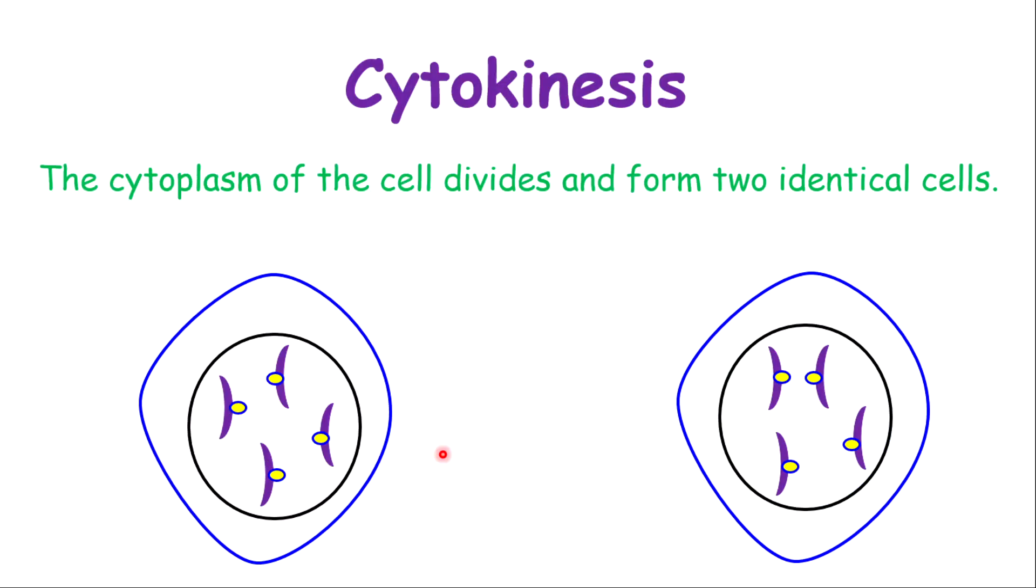After telophase, you will have the cytokinesis. Cytokinesis is when the cytoplasm of a cell divides and forms two identical cells. We have two of them being exactly the same in terms of number as the original parent cell.